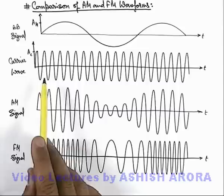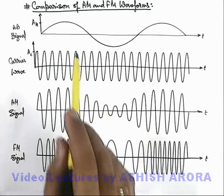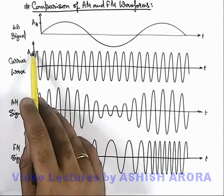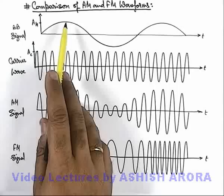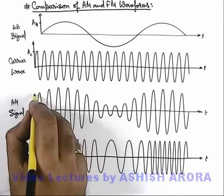When we talk about the amplitude modulated signal, this is the AM signal which we already discussed in previous sections. When the amplitude of this carrier wave is modulated by the baseband signal, its amplitude varies between...